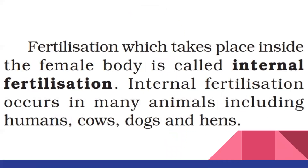Now we are going to learn about two types of fertilization: external fertilization and internal fertilization. The fertilization we discussed for human beings is an example of internal fertilization. Fertilization which takes place inside the body of the female is called internal fertilization. Internal fertilization occurs in many animals including humans, cows, dogs, hens, etc.